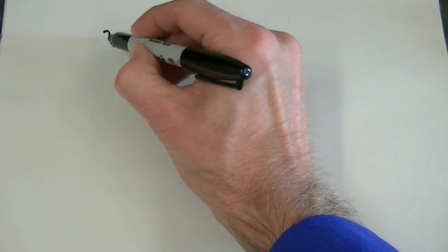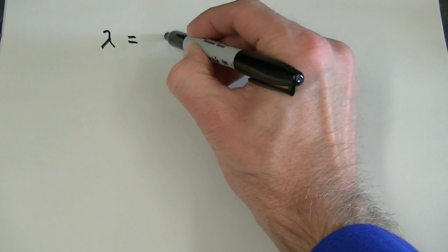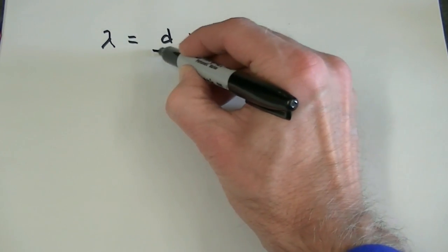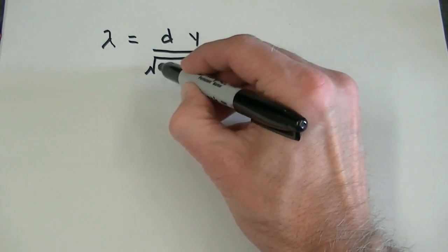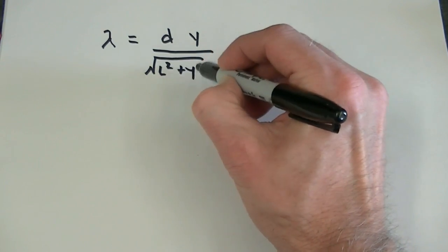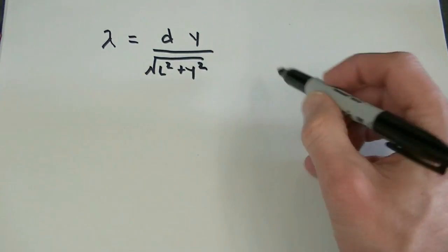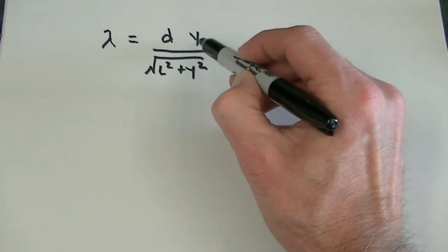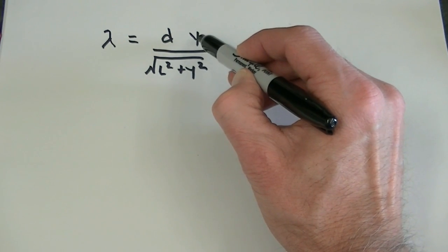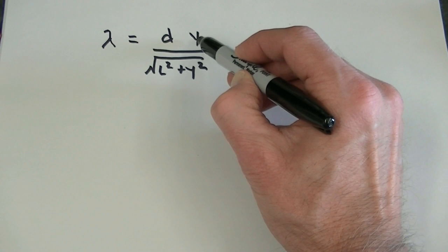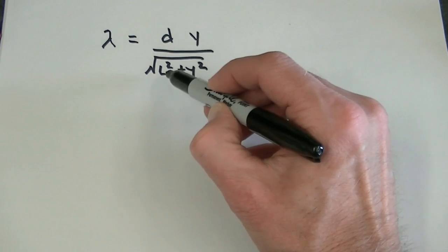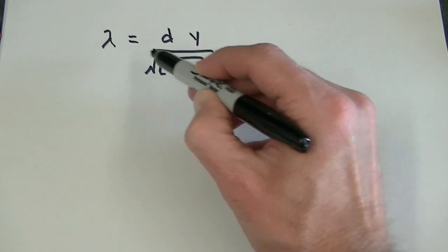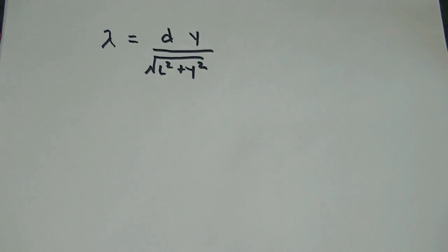We'll now derive this equation for you. Lambda equals d times y over the square root of L squared plus y squared, where d is the distance between the slits in the diffraction grating, y is the distance between the light source and its next nearest neighbor, L is the distance between the light source and the diffraction grating, and lambda is the wavelength of light.